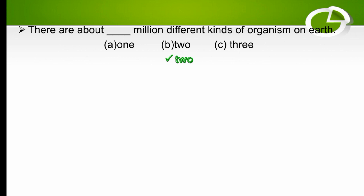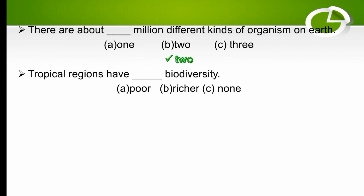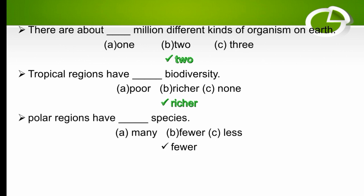There are about two million different kinds of organisms on Earth. Tropical regions have richer biodiversity — the right option is richer. Polar organisms have fewer species, while tropical regions have richer biodiversity. These two MCQs are related to one another.